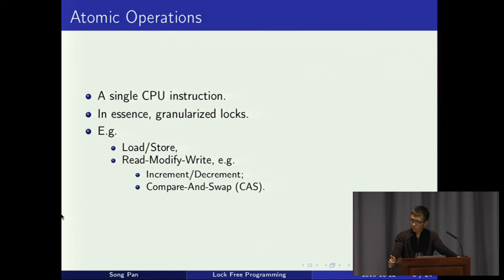Examples of atomic operations include atomic load and store, or the category of read-modify-write — for example, increments, decrements, and compare-and-swap. Compare-and-swap, abbreviated as CAS, is a very useful instruction in lock-free programming.